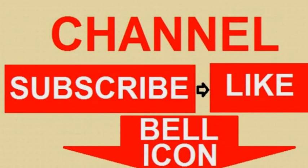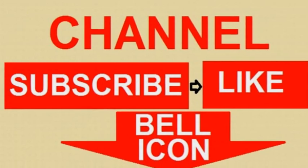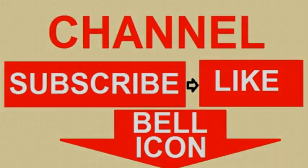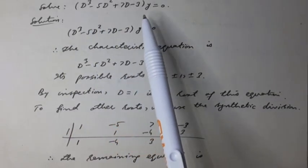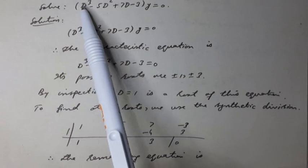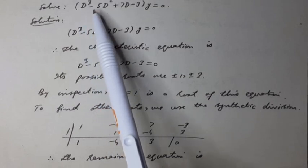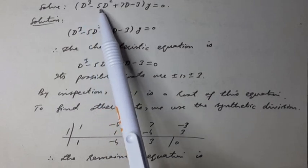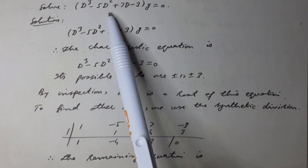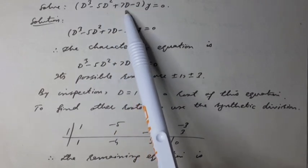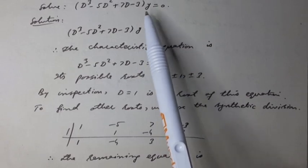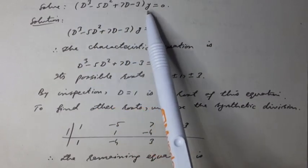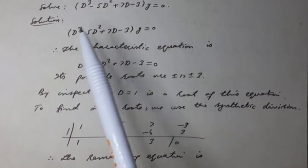Share the videos. Solve the homogeneous linear differential equation: d³y/dx³ minus 5 d²y/dx² plus 7 dy/dx minus 3y equals 0. The solution follows.